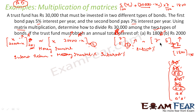For b×a dash: b is 2×1 and a dash is 1×2 — inner dimensions are 1 and 1, they match, but output is 2×2. Not useful. For b dash×a dash: both are 1×2 — multiplication is not possible since tail is 2 and head is 1. So out of all combinations, only two are valid: a dash×b and b dash×a.